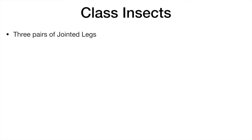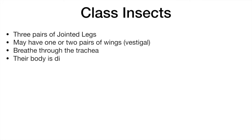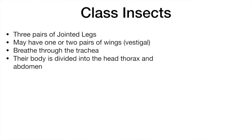Insects have three pairs of jointed legs and two pairs of wings, though one or both can be vestigial — vestigial wings are strictly ornamental. All insects breathe through a trachea and their body is divided into the head, thorax and abdomen.